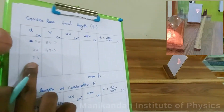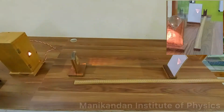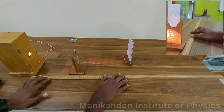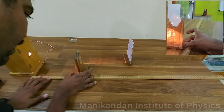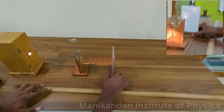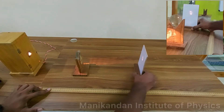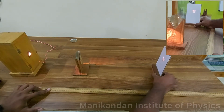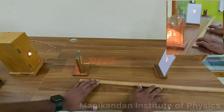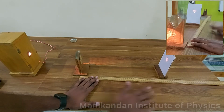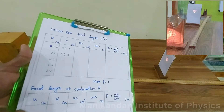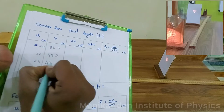Now my u value is 24 cm. I am varying the object distance from 22 to 24, and moving my screen until a clear image is formed. The distance from the lens to the screen is approximately 42.5 cm. So my image distance v is 42.5 cm.